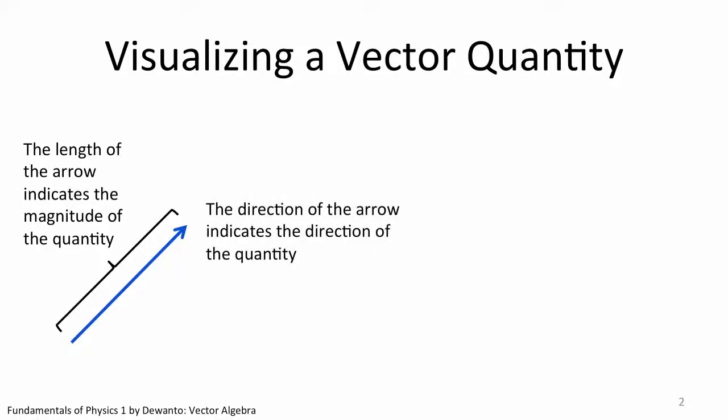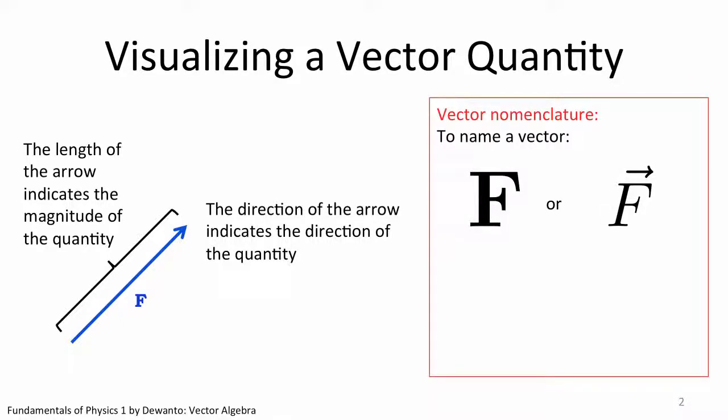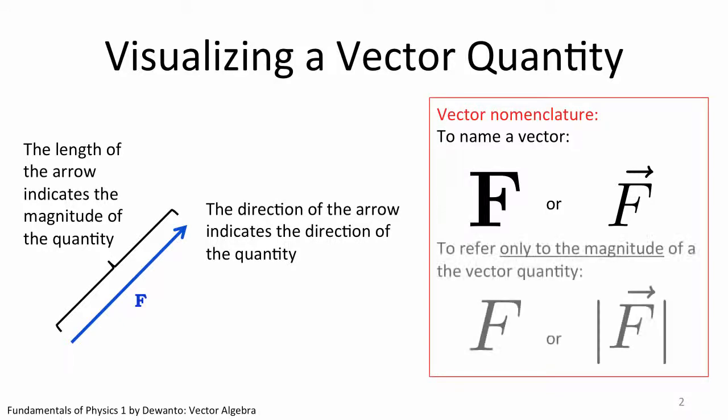We can also name the vector quantity. Let's say we want to call the vector F. F may stand for force for instance. Conventionally we do so in writing by either writing the name in bold or to put an arrow on top of the vector name. Sometimes we are only interested in the magnitude of the vector, which we can refer to by writing the name of the vector unbold or in between two vertical lines like shown here. These two parallel vertical lines are also known as the absolute sign in mathematics.